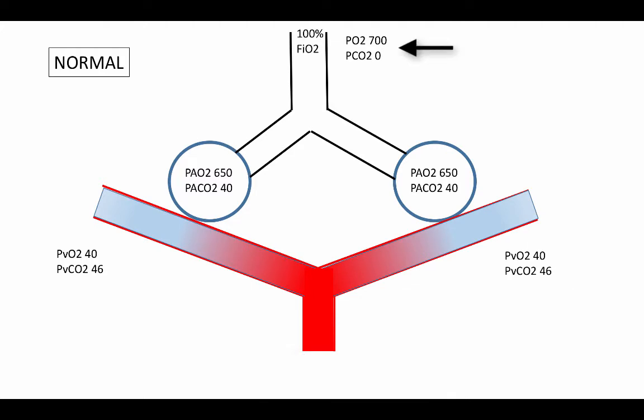If we increased the inspired oxygen to 100% FiO2, that would correlate with a partial pressure of oxygen of roughly 700 millimeters of mercury. That would translate to alveolar partial pressures of roughly 650 millimeters of mercury, with alveolar PCO2 remaining constant at 40. Again, venous gas will pass by the alveoli, gas will equilibrate, but now the oxygen tensions in the arterial blood is significantly increased.